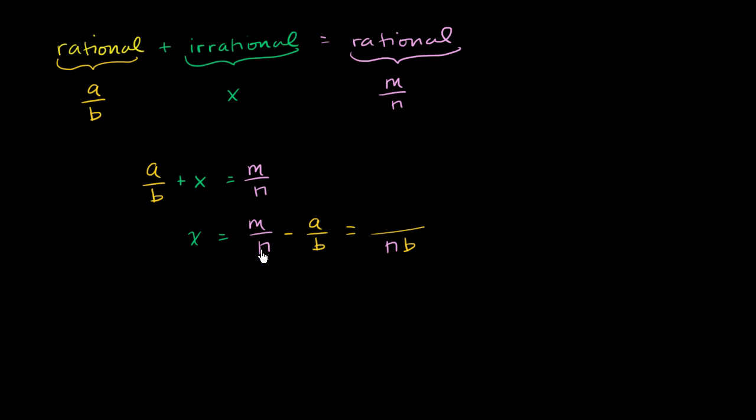m over n is the same thing as mb over nb, so this would be mb. I'm just adding these two fractions: mb minus... a over b is the same thing as n times a over n times b, so minus n times a.